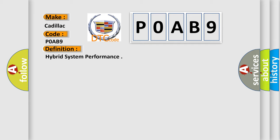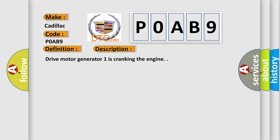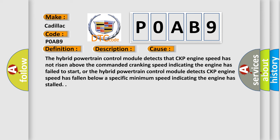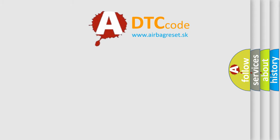Here is a short description of this DTC code. Drive motor generator 1 is cranking the engine. This diagnostic error occurs most often in these cases: the hybrid powertrain control module detects that CKP engine speed has not risen above the commanded cranking speed, indicating the engine has failed to start; or the hybrid powertrain control module detects CKP engine speed has fallen below a specific minimum speed, indicating the engine has stalled. The airbagreset website aims to provide information in 52 languages.